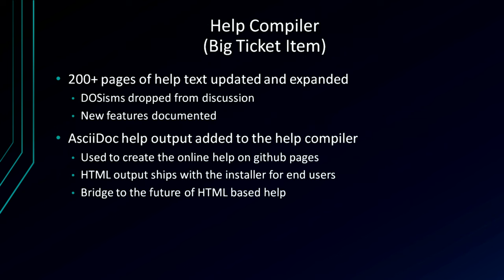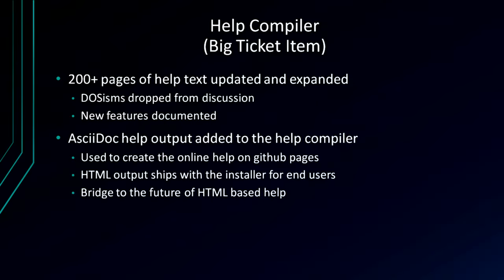The big ticket item, unexpectedly, was the 200 pages of documentation. I had to go through every single line of all those help files to remove DOS-specific content — like 'if you have the wrong VGA card it's not going to work' — and also add some new background text on certain fractal types, since the L-system background had been skimmed over. I got the help compiler to output AsciiDoc format so we could get nice HTML help. It ships with the application — the integrated help is still the DOS text-screen system, but there's now decent-looking HTML help as well.